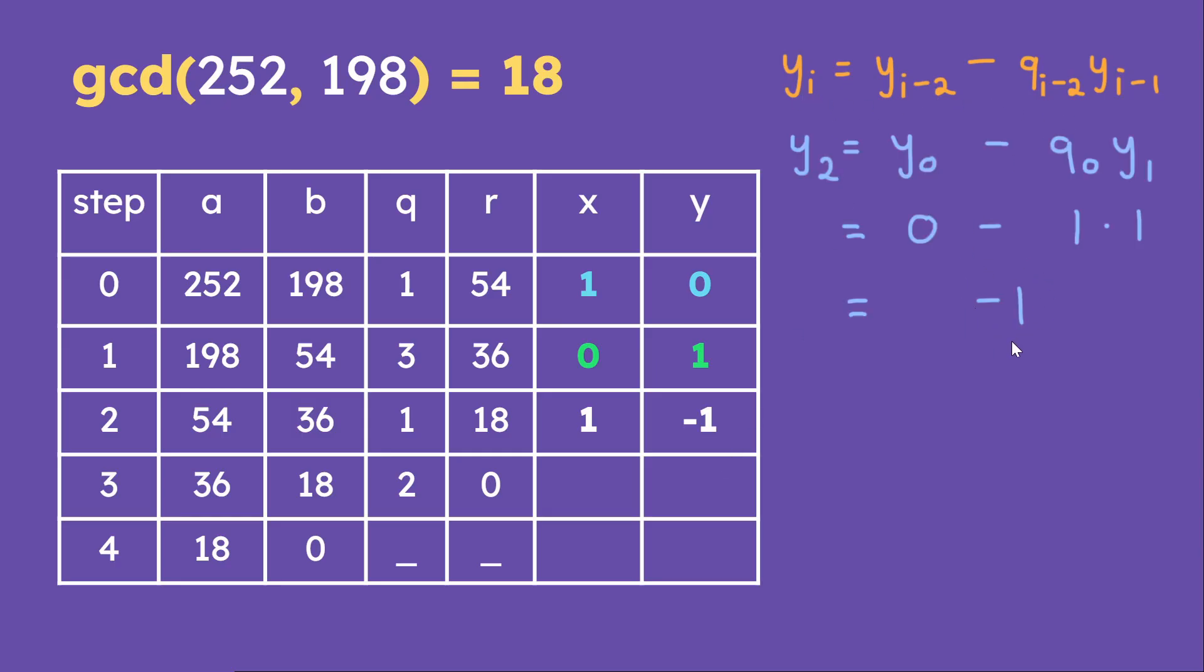And so this is what you should have at the end. You should have negative 1. And then we fill in x sub 3. You're going to get negative 3. And then y sub 3 will give you 4. And then you have x of this row or row number 4. We're going to get 4. And then y sub 4 will give you negative 5. So this here will be our answers.